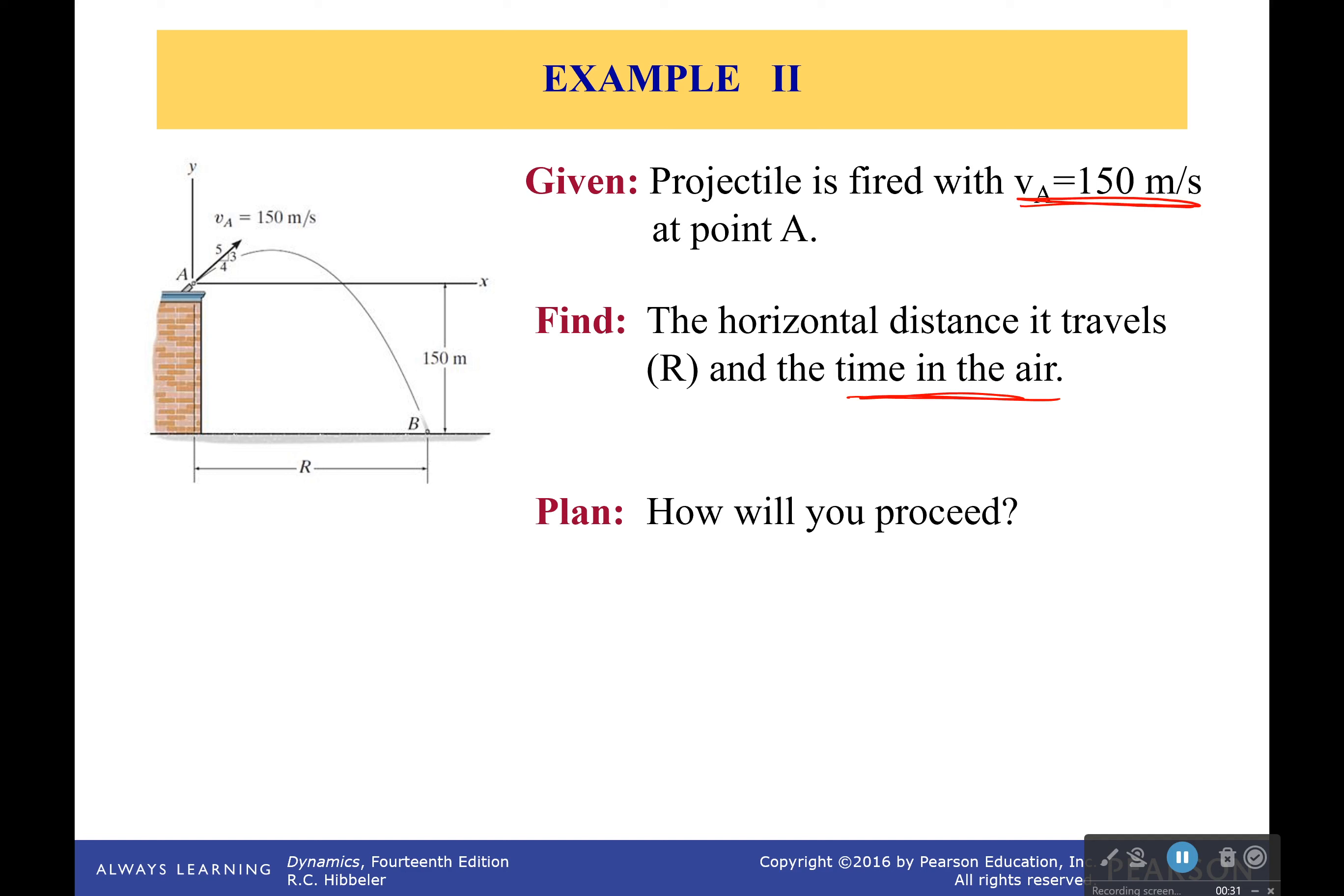Now do not get confused by what I said on the last example that it's always going to have the same velocity coming up as it comes down. We do know what the velocity is when it hits this point right here. That will be the same. But once it goes below that, the velocity is going to have increased, it will be greater.